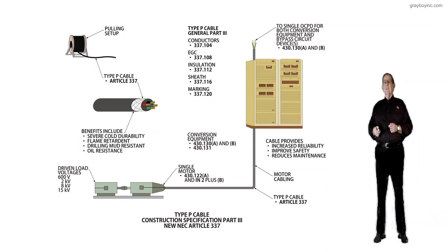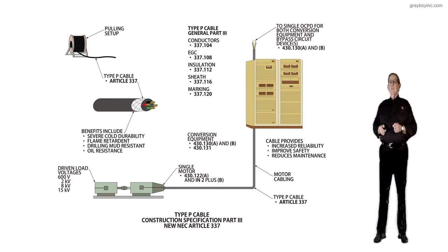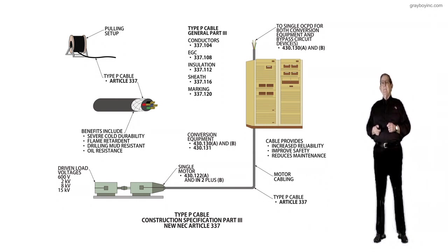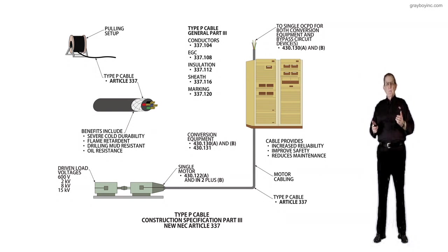Now the motor itself, to calculate the conductors we'd see 430.122A. And we would also look at the informational note plus B as in Boy for your overcurrent device. And we pretty well have that.